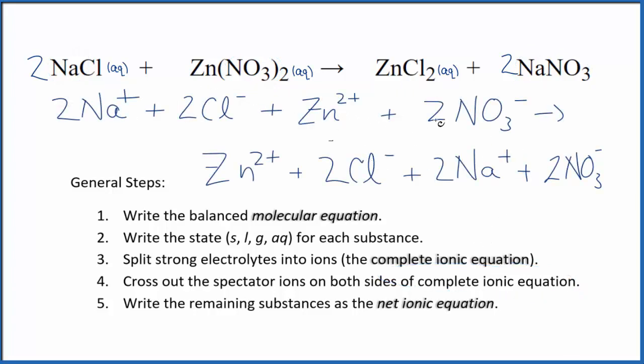So what you note here with this complete ionic equation for NaCl plus Zn(NO3)2 is all of these ions are the same. We have two sodium ions, two sodium ions, two chloride ions, two chloride ions. A zinc ion here, a zinc ion here, and then two nitrate ions, two nitrate ions.